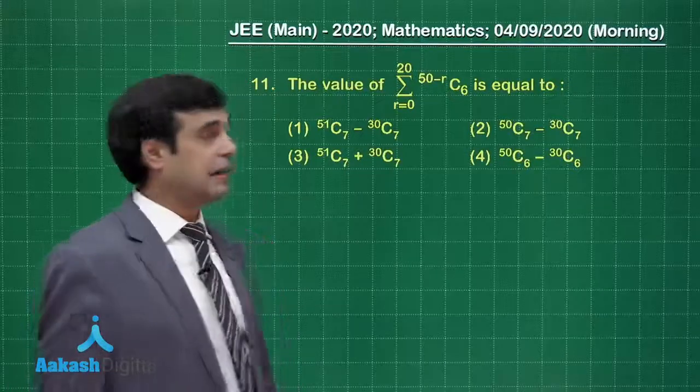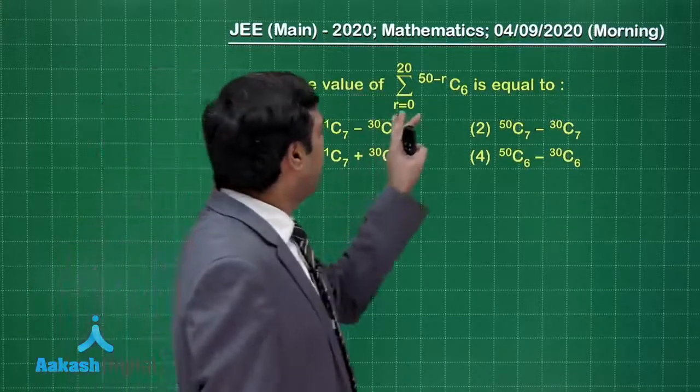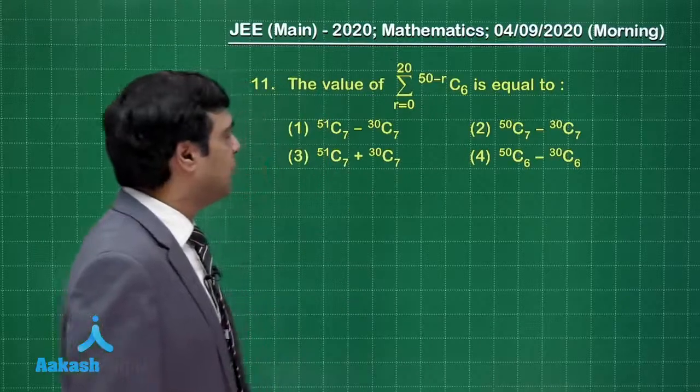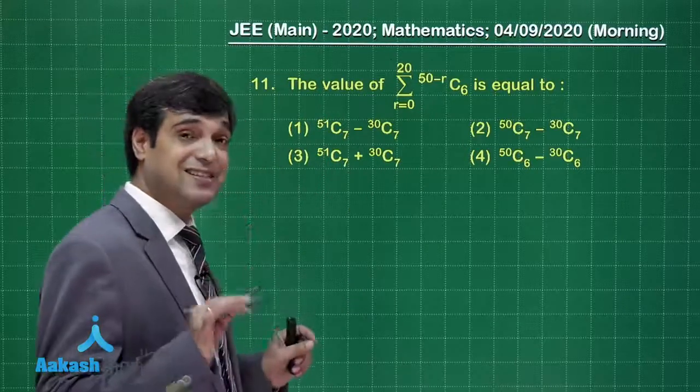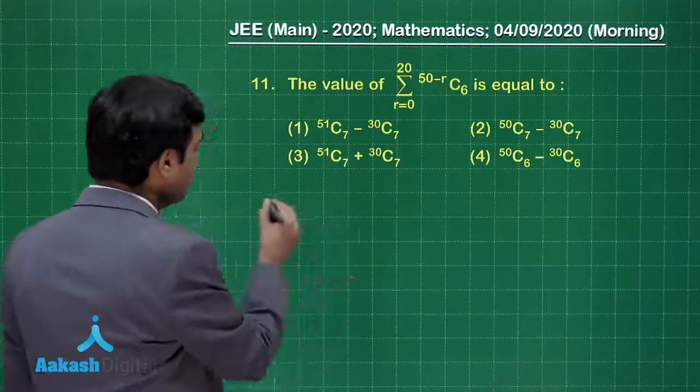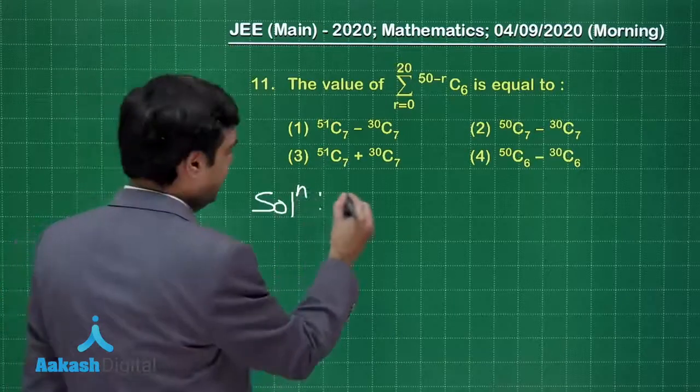Let's take up the next one, question number 11: the value of summation r equals 0 to 20 of 50 minus r C 6 is equal to. Let's try this question based on binomial coefficients.